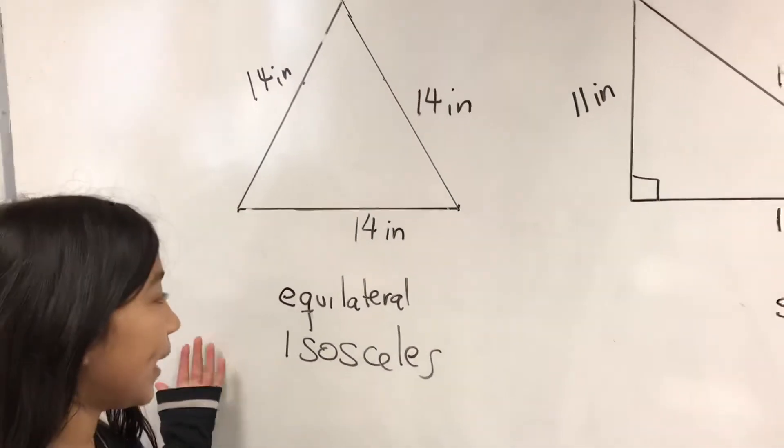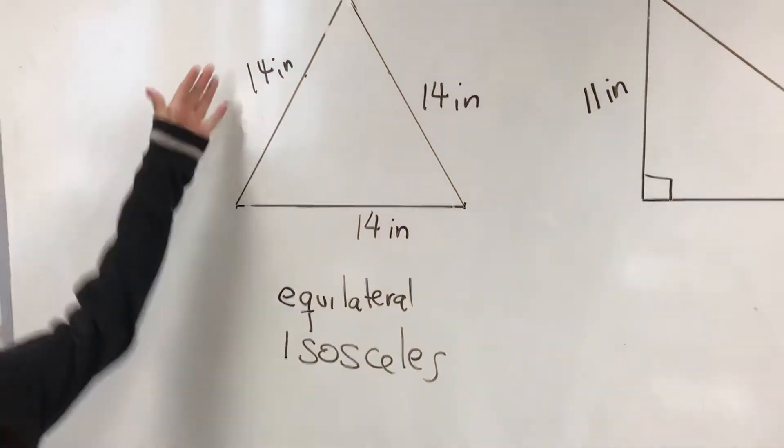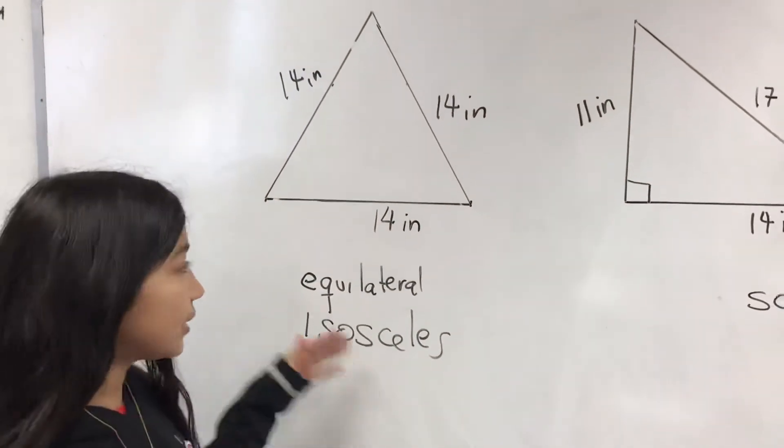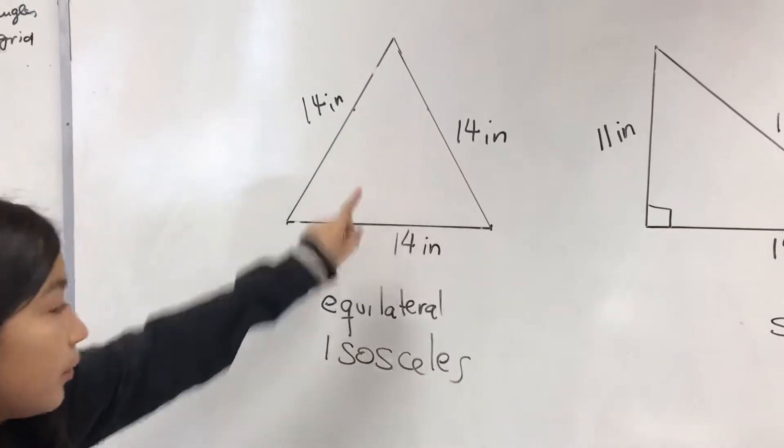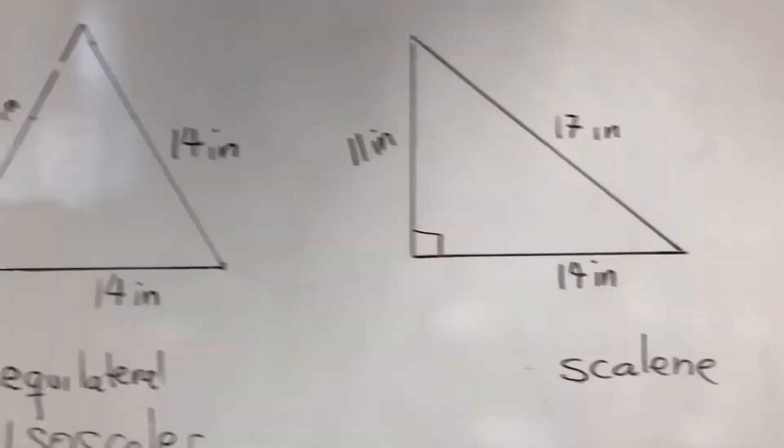This triangle is an equilateral because all the sides are equal, and it's isosceles because two sides are equal. Two sides are equal, okay.